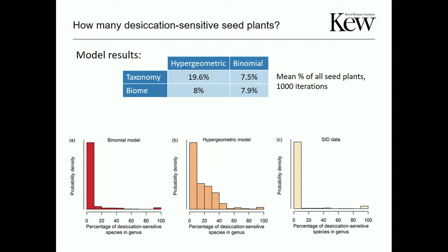One model tells a different story, but we can explain it. The seed information database shows that genera are pretty binary — either desiccation-tolerant or desiccation-sensitive, with little in the middle. Our binomial model produces a similar pattern, while the hypergeometric model inflates the middle categories, causing higher percentages. The binomial model sticks with the dominant trait value.